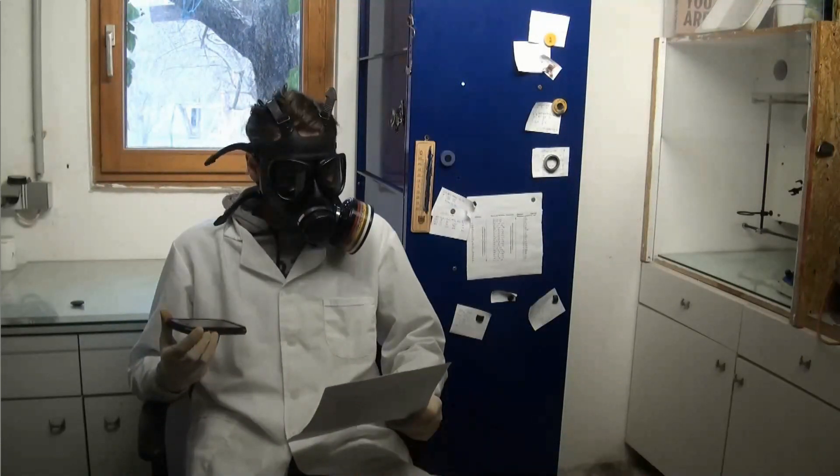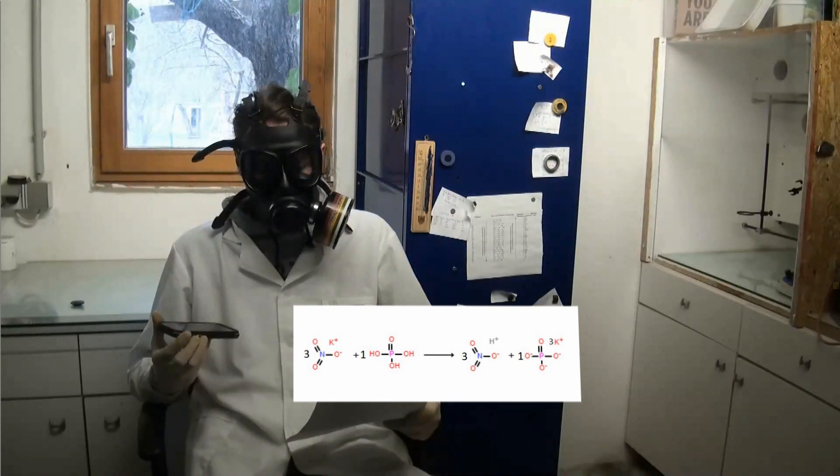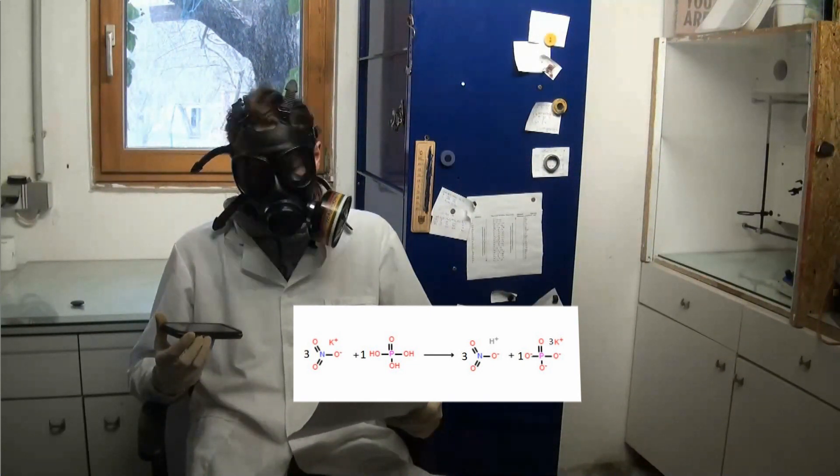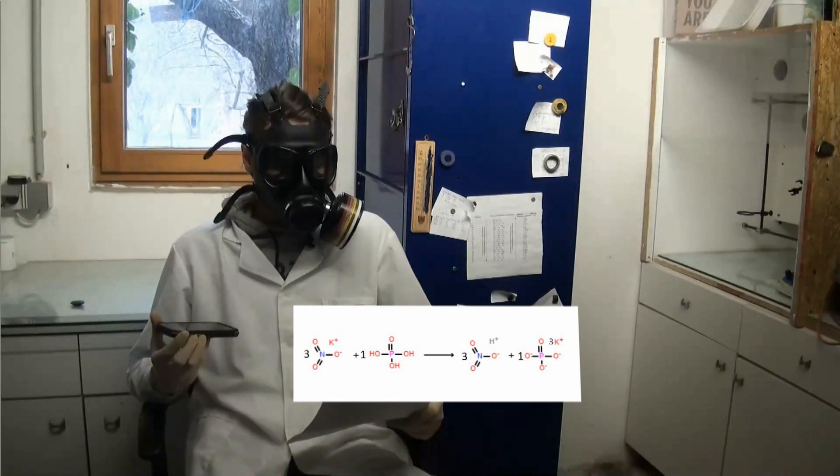The ideal scenario would be that one molecule of phosphoric acid reacts with three molecules of potassium nitrate, forming three molecules of nitric acid and one molecule of tri-potassium phosphate.